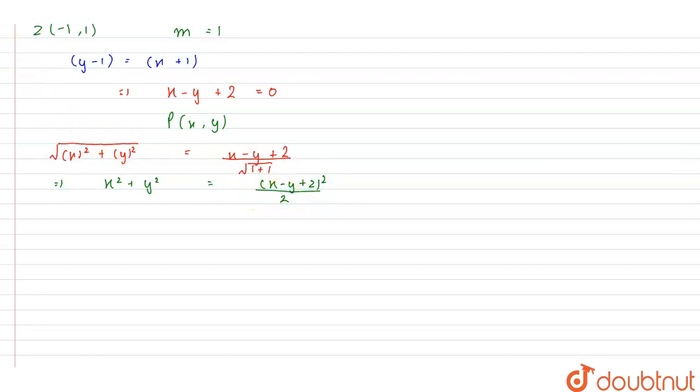we get x² + y² = (x - y + 2)²/2. Solving this equation, we get x² + y² + 2xy - 4x + 4y - 4 = 0. So, this is the required equation of the parabola.